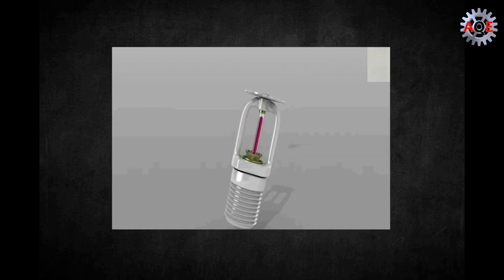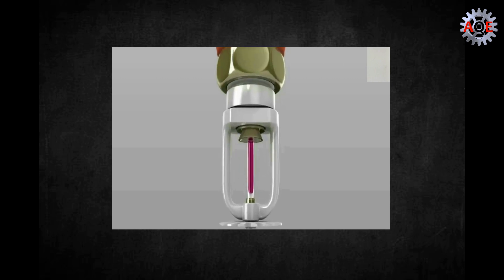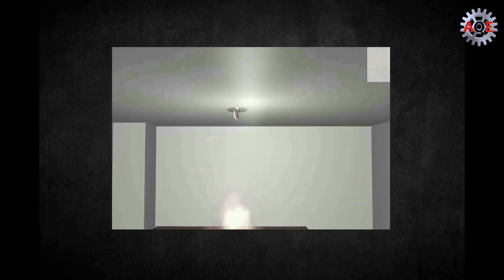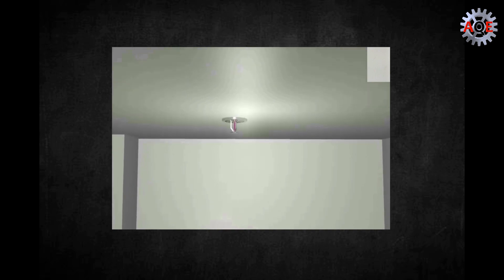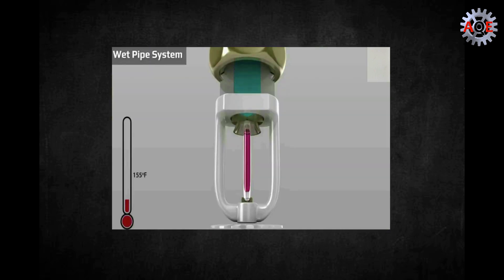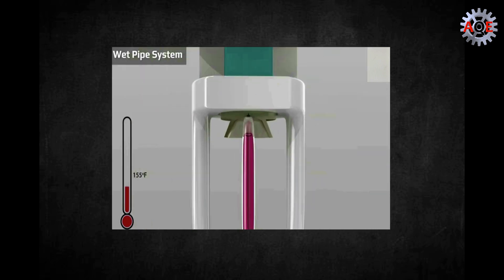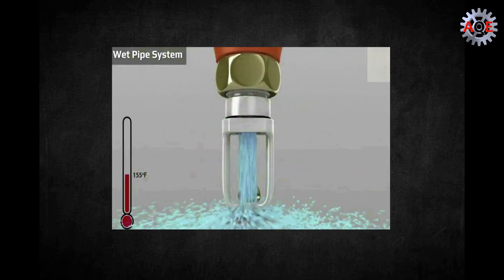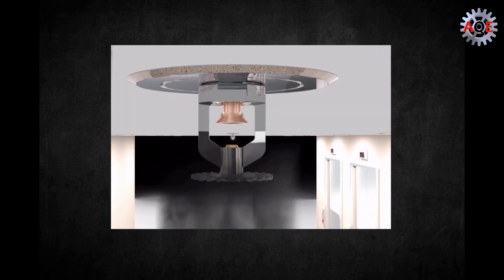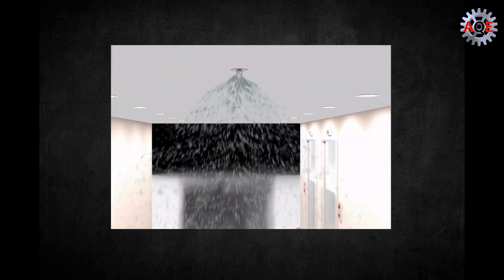Most sprinkler heads feature a glass bulb filled with a glycerin-based liquid. This liquid expands when it comes in contact with air heated to its design temperature. When the liquid expands, it shatters its glass confines and the sprinkler head activates. When heat activates a sprinkler head, a valve opens allowing pressurized water from the pipe system to flow out.